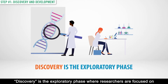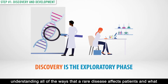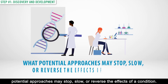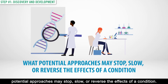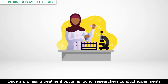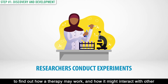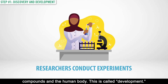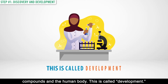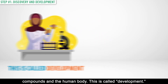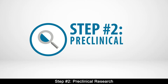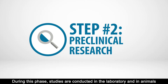Step number one: Discovery and Development. Discovery is the exploratory phase where researchers are focused on understanding all of the ways that a rare disease affects patients and what potential approaches may stop, slow, or reverse the effects of a condition. Once a promising treatment option is found, researchers conduct experiments to find out how a therapy may work and how it might interact with other compounds in the human body. This is called development.